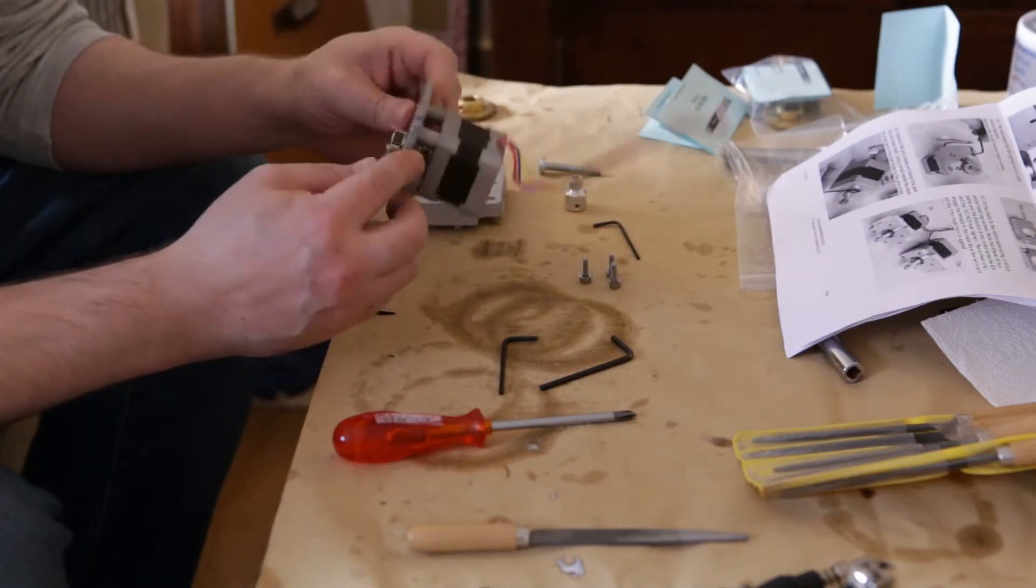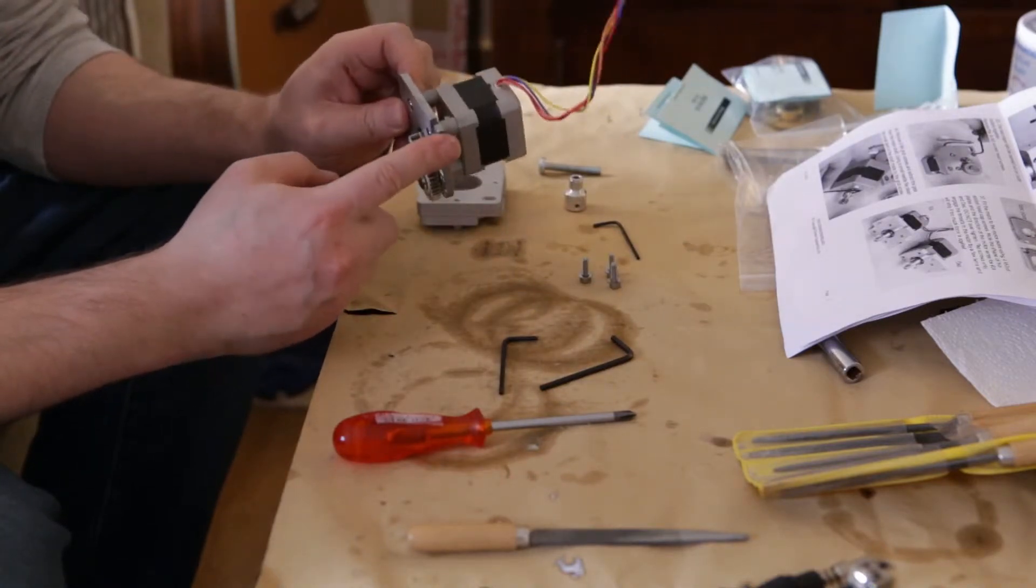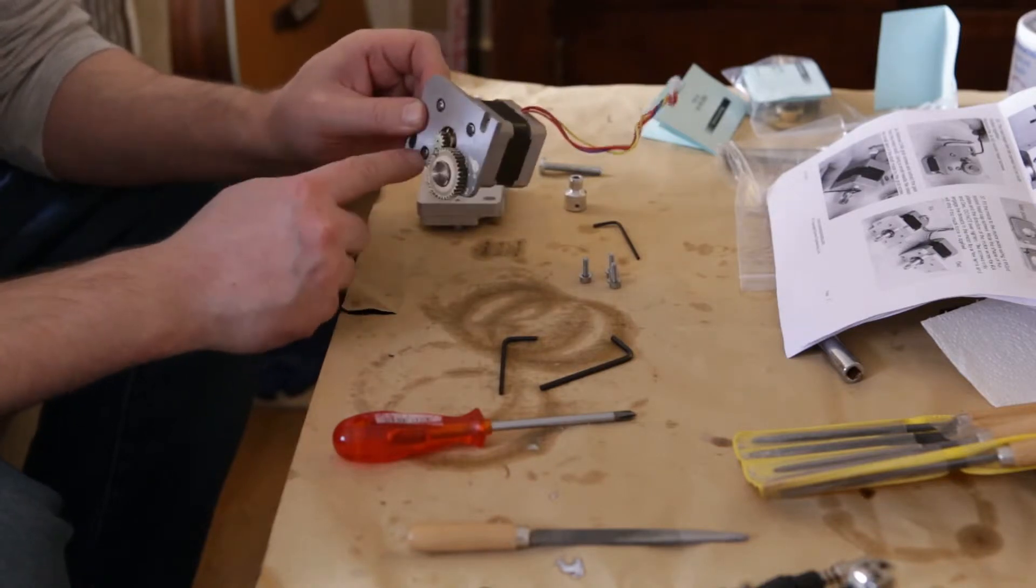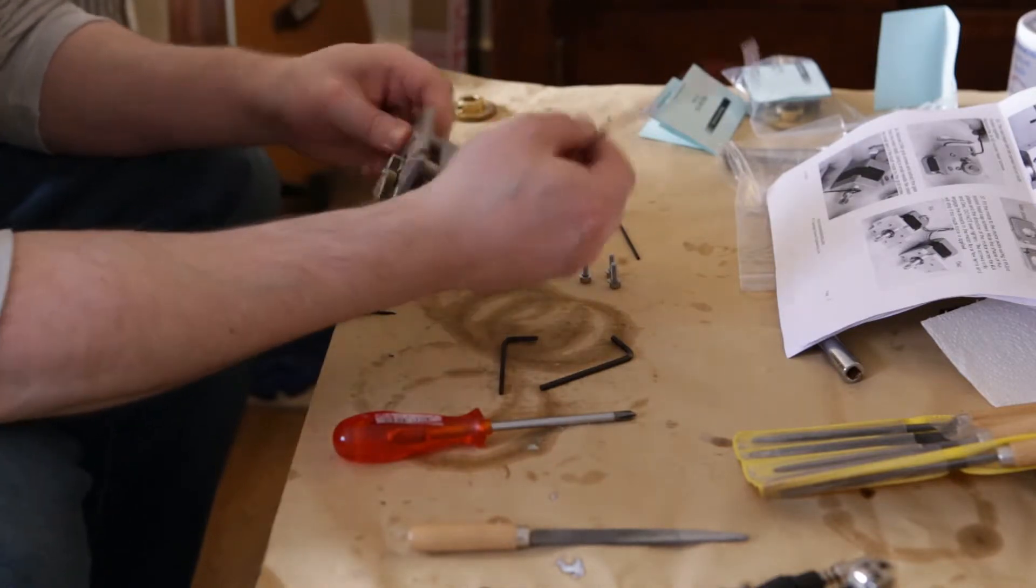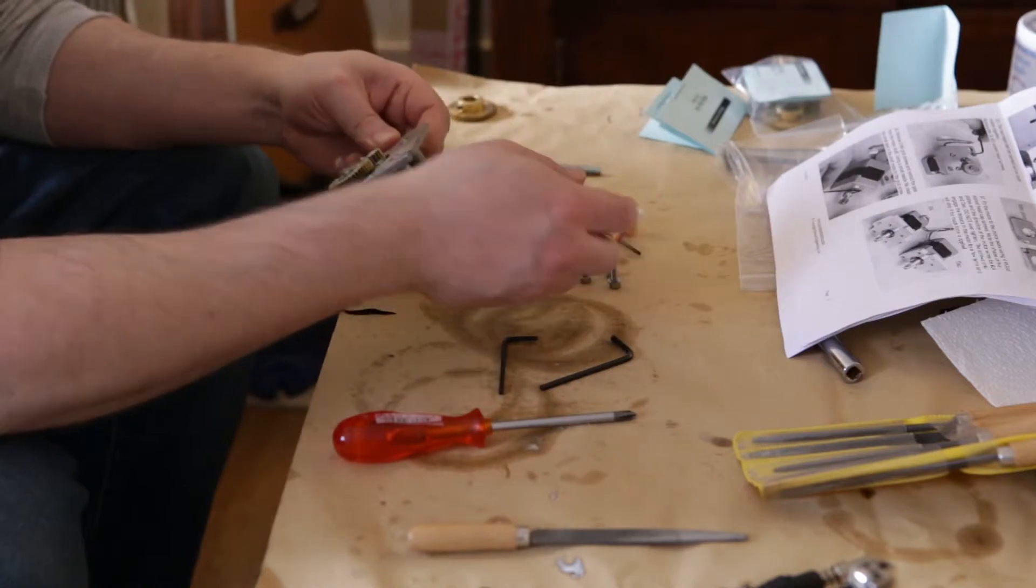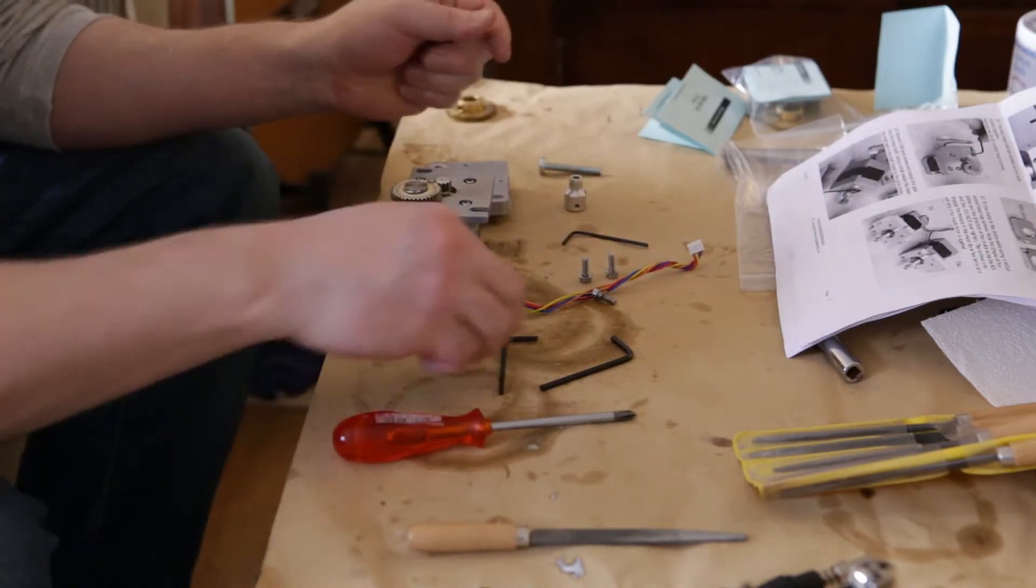So again, I'm going to just dismantle the old plate by undoing these three screws, making sure that my wires are facing out from you this time.